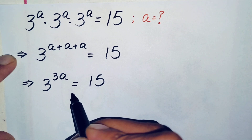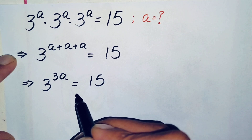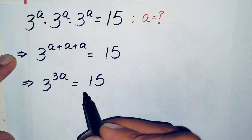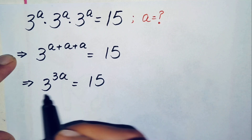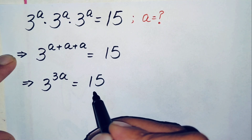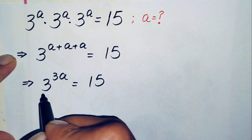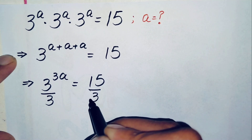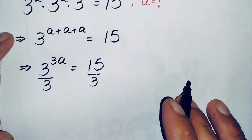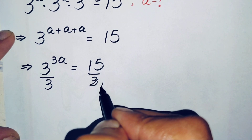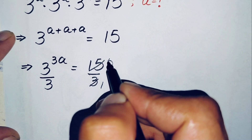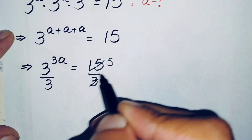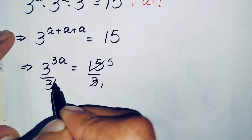Now there are two approaches to solve this problem further. One is to directly take the common log on both sides, and another method is to note that 3 and 15 are both divisible by 3. So we will divide both sides by 3. Simplifying the right-hand side: 3 times 1 is 3, and 3 times 5 is 15, so this division gives 5, and the power of 3 on the left is now 1.